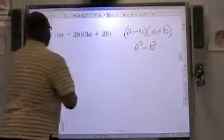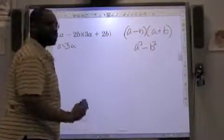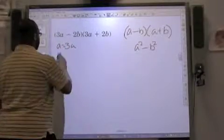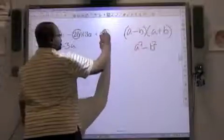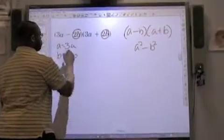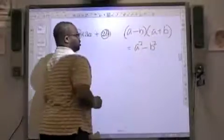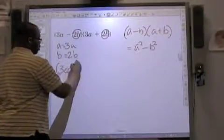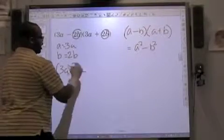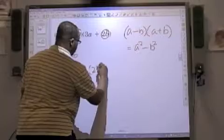So let's identify our A. Our A is going to be 3 times A. Let's go ahead and identify our B. B is going to equal 2B. You can see here. Now, we know we can use this. So let's go ahead and put our A in. 3A squared, minus our B, which is 2B, 2B squared.